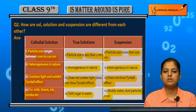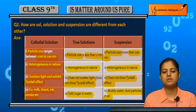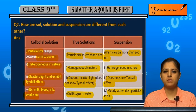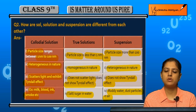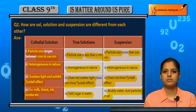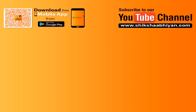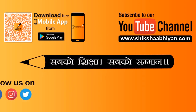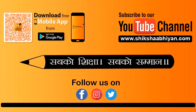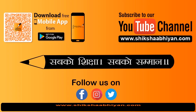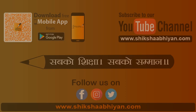Examples of true solutions are salt or sugar in water. Examples of suspensions are muddy water and dust particles in air. So this is about the differences between colloidal solution, true solutions, and suspension. Thank you.